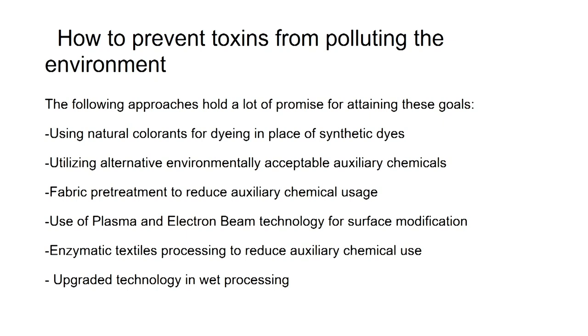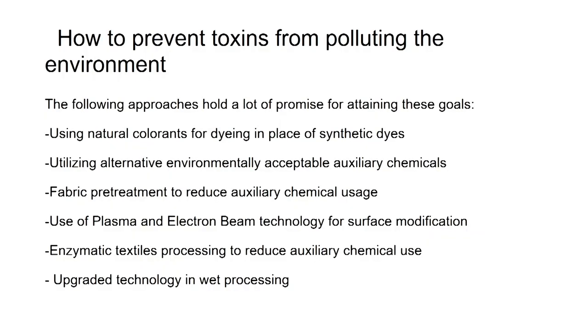Fabric pretreatment to reduce auxiliary chemical usage: If we can perform plasma treatment or electron beam irradiation on the fabric, we can eliminate the metal mordanting step and make the surface accept the dye more readily — no mordants needed. Use of plasma and electron beam technology for surface modification is the need of the hour. Enzymatic textile processing and upgraded wet processing technology are also safe and urgently required alternatives.